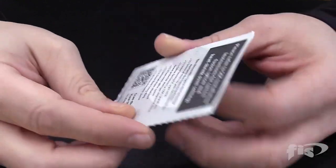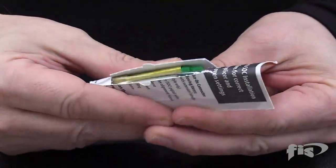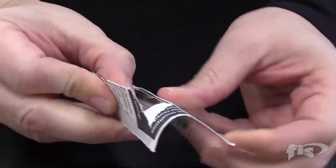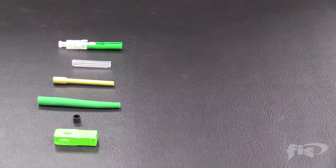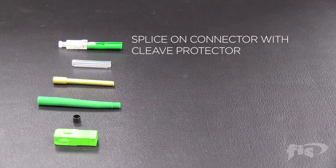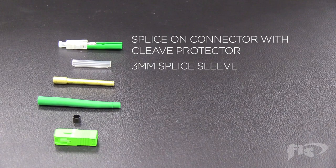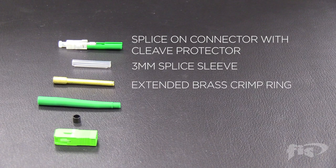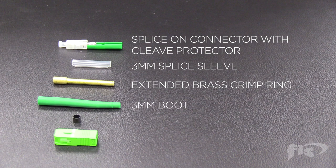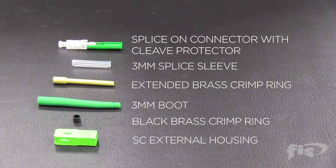Take the FIS splice-on connector blister pack and turn it upside down. Fold in half and open it from the back. In the pack, there is the splice-on connector with cleave protector, 3mm splice sleeve, the extended brass crimp ring, 3mm boot, the black brass crimp ring, and the SC external housing.